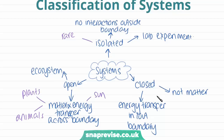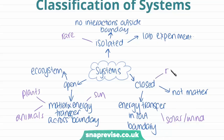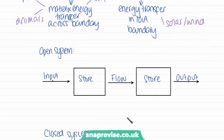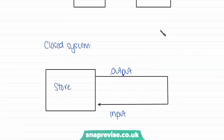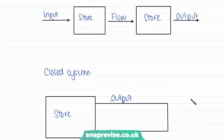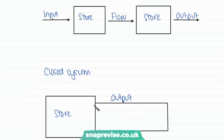Closed systems are different in that matter cannot be transferred in and out of them — only energy can be transferred in and out, such as solar energy or wind energy, but no actual matter is moved beyond the boundaries of the system. These are also very rare in real life. In an open system, it's more linear: we have an input going into a store, then a flow or transfer of energy between stores, and then an output at the end. Whereas in a closed system, everything is cycled back — the output feeds back into the input and goes back into the store. That is the key difference between a closed and an open system.